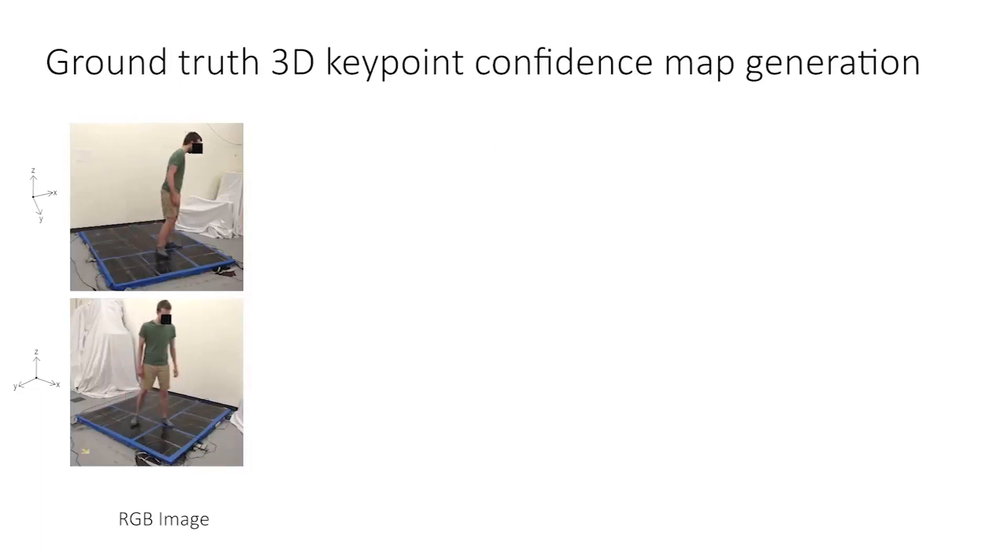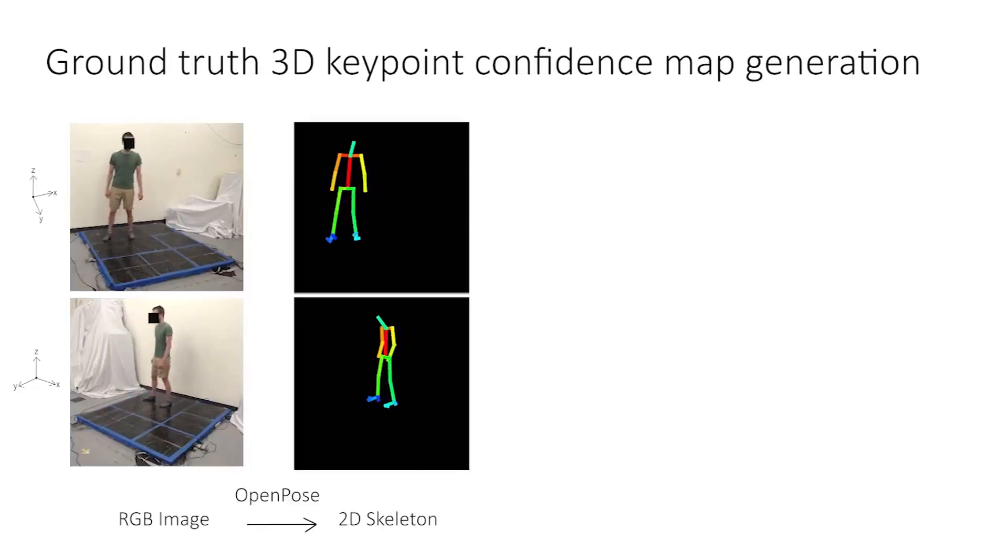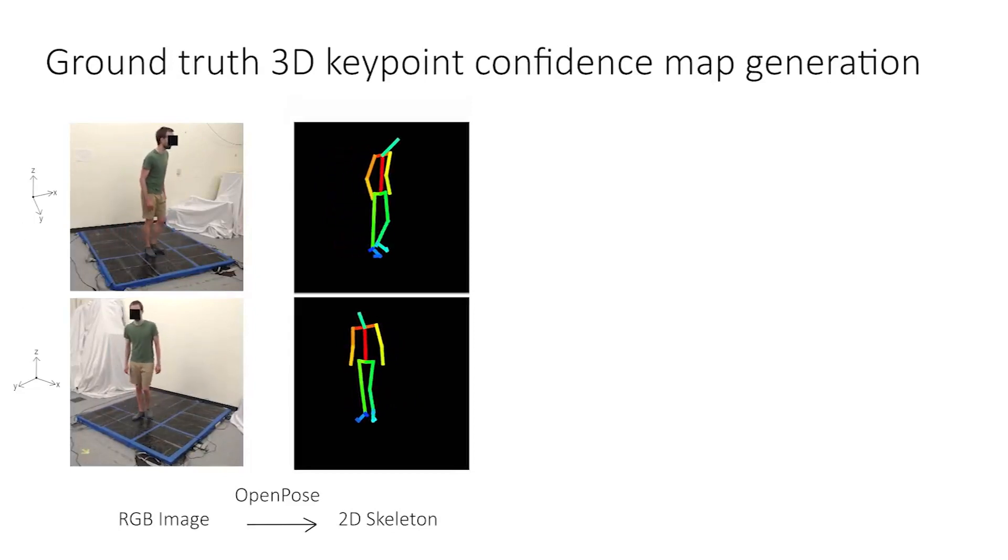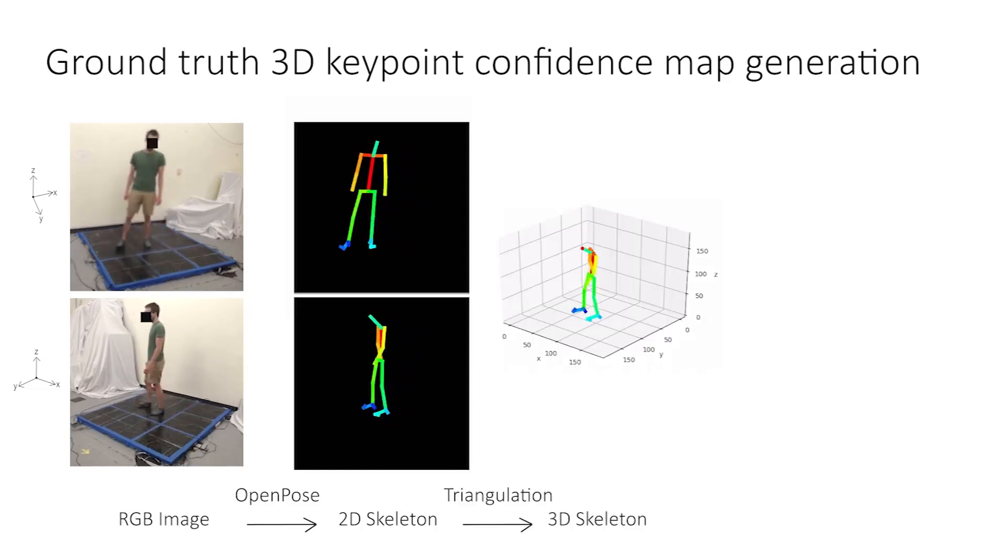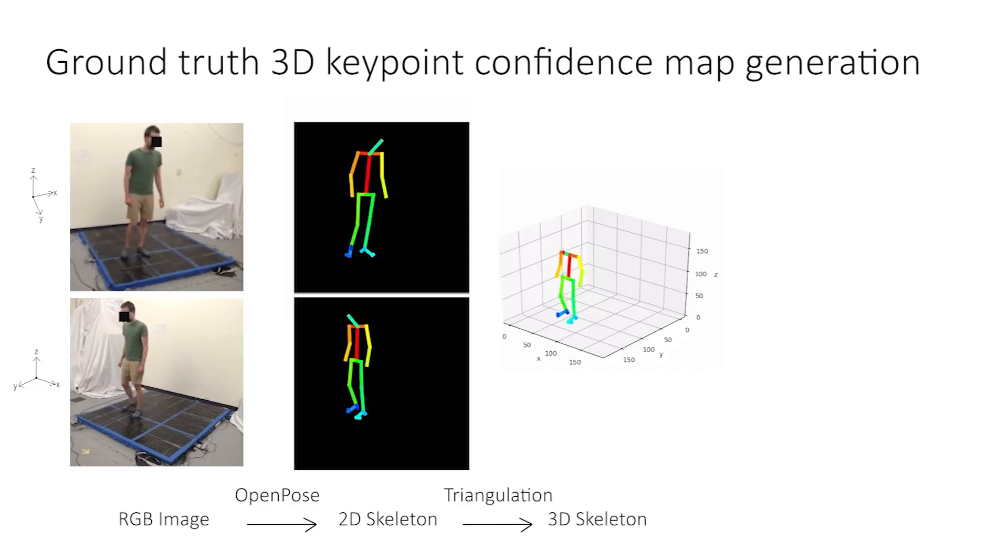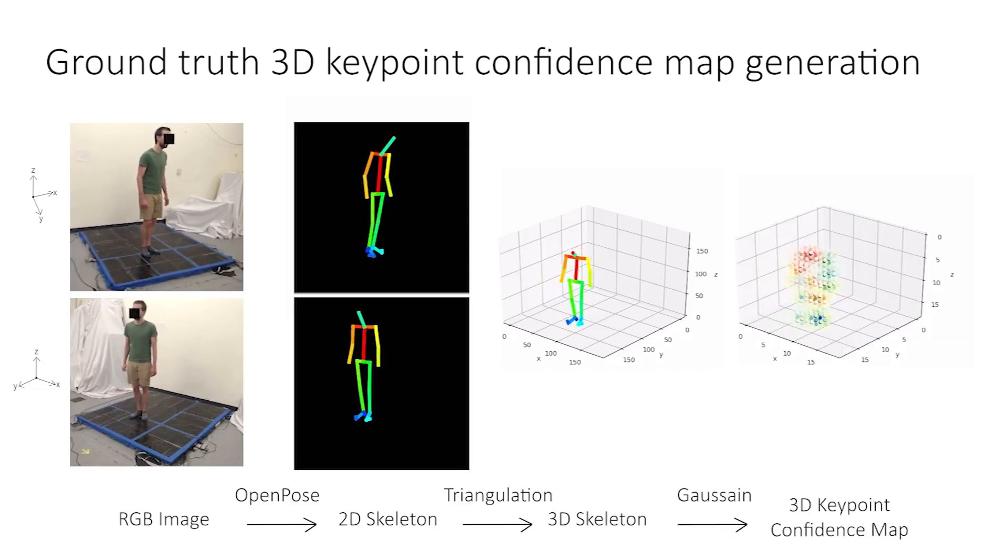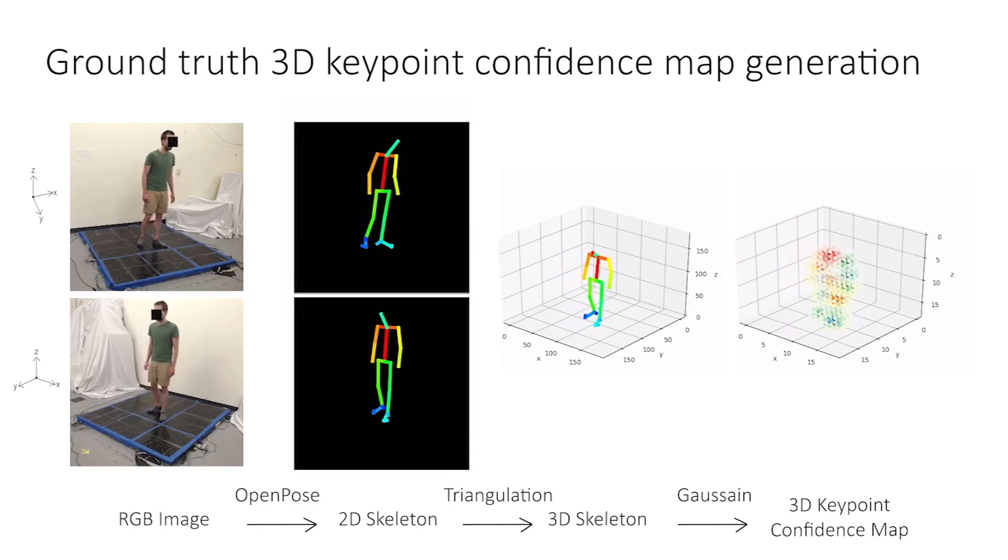We capture visual data with two synchronized and calibrated cameras. In order to annotate the ground-truth human pose in a scalable manner, we leverage a state-of-the-art vision-based system, OpenPose, to generate 2D skeleton from the RGB images. We then triangulate the 2D skeleton and apply a 3D Gaussian filter to generate the 3D keypoint confidence map.